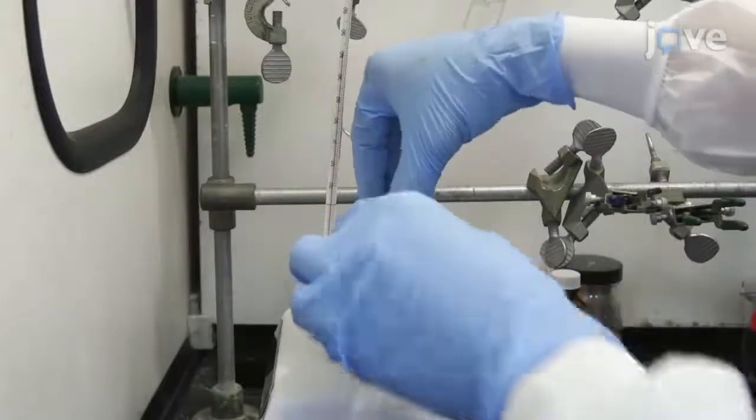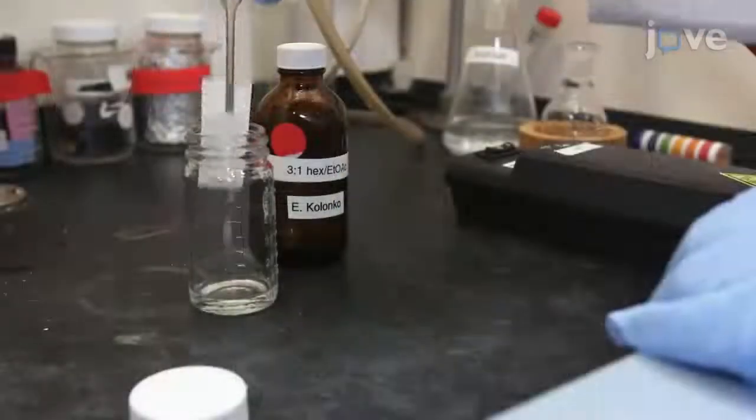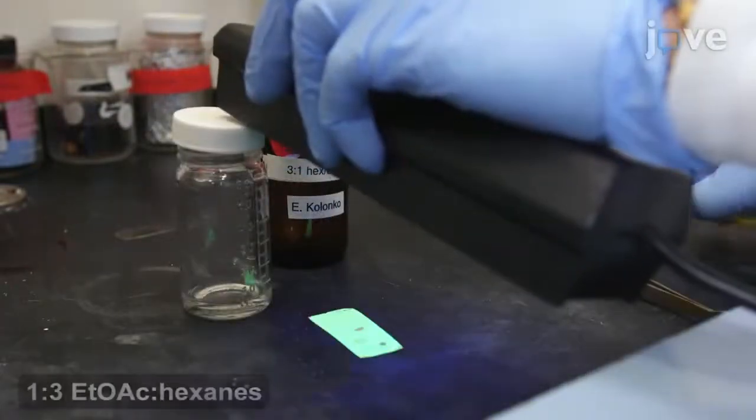Clamp the flask in a 40-degree Celsius water bath and stir the reaction. Monitor the reaction by TLC using ethyl acetate and hexanes.